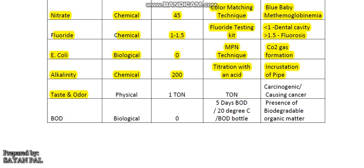Then taste and odor. It is a physical water quality parameter measured by TON — threshold odor number technique. Its desirable value is 1 TON and cause-for-rejection value is 3 TON. Water should be tasteless and odorless, but the elements which cause taste and odor in water are actually carcinogenic — that is, they cause cancer.